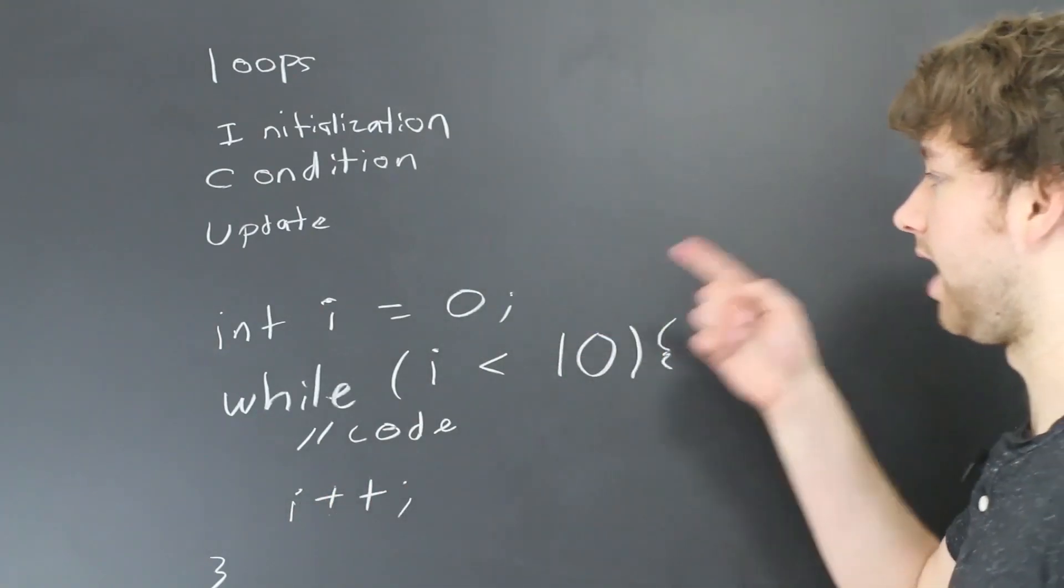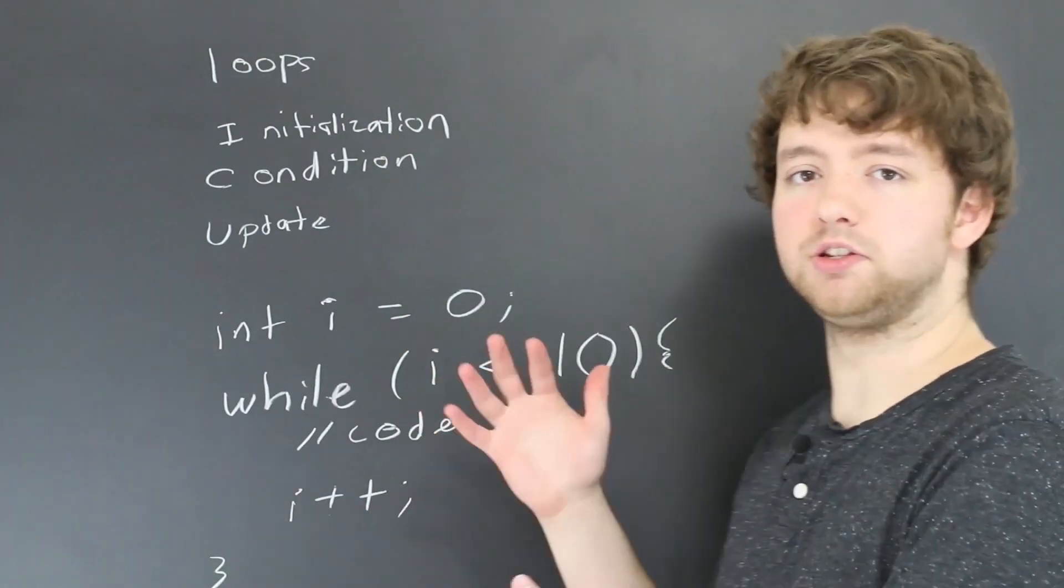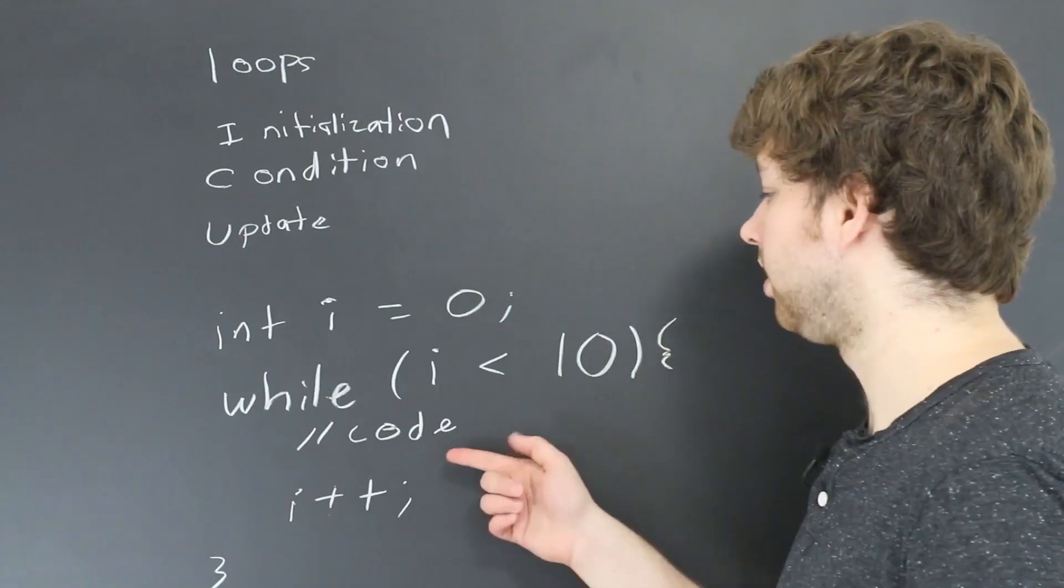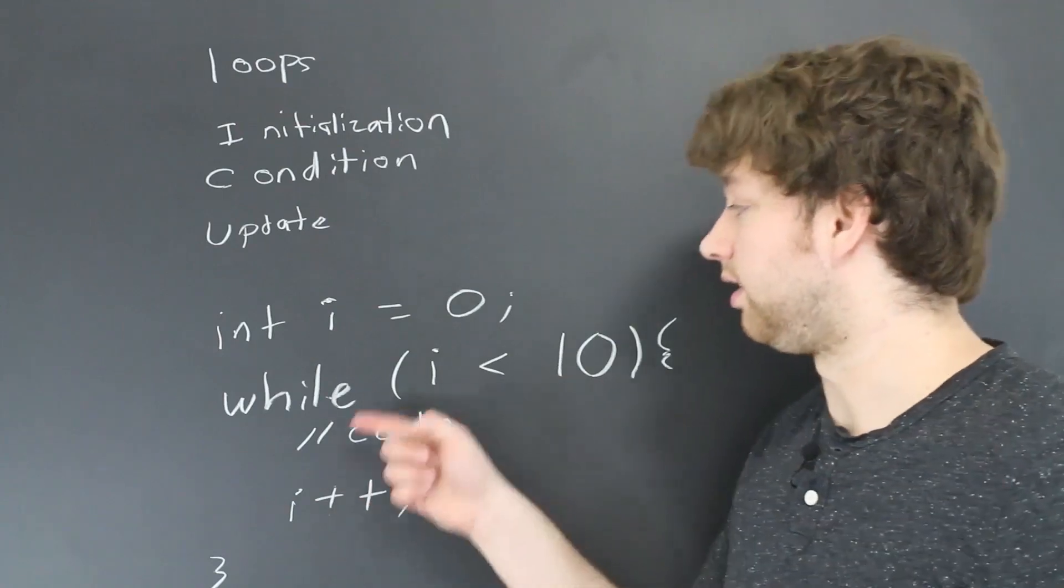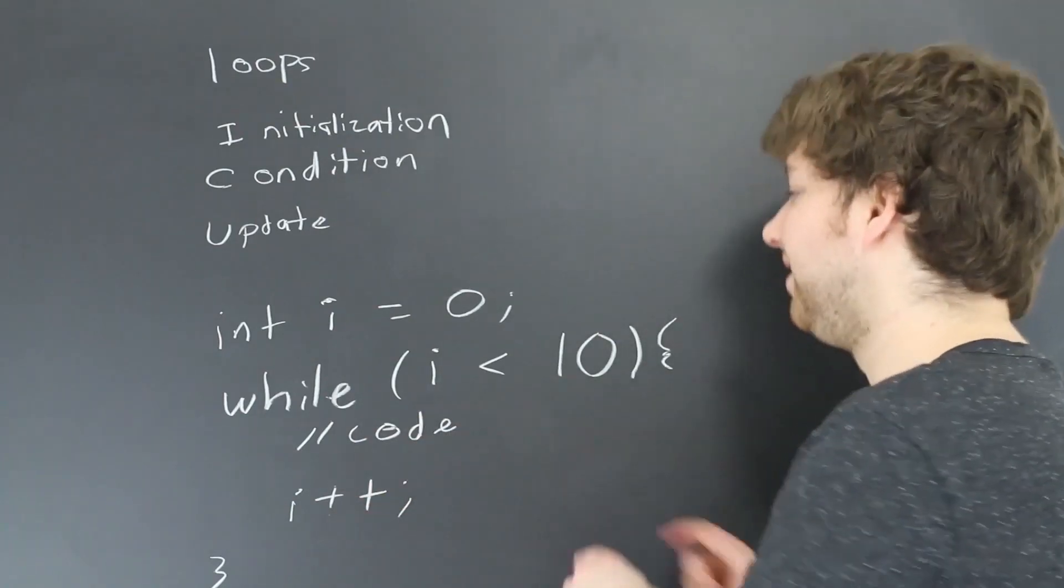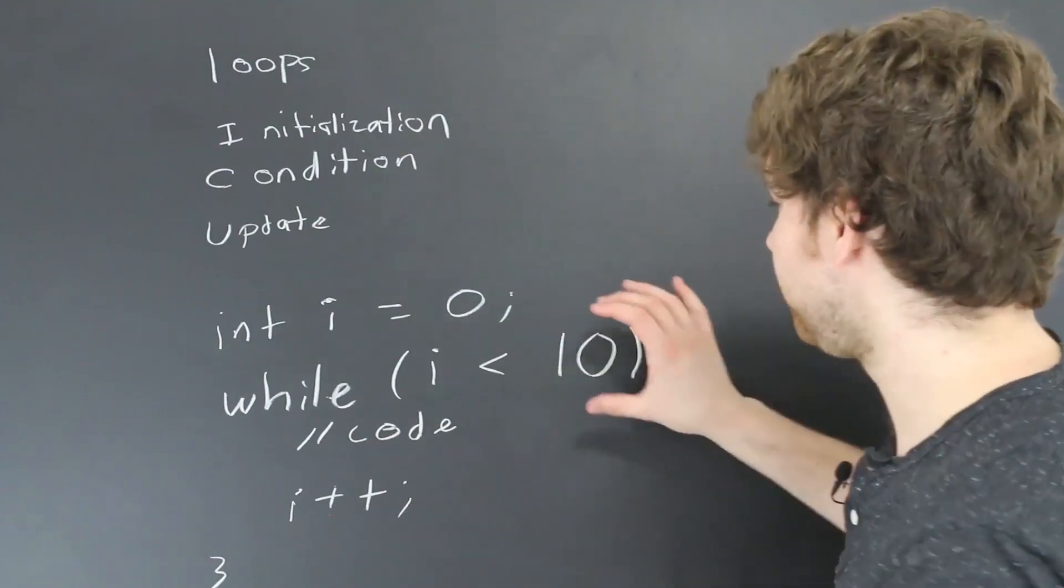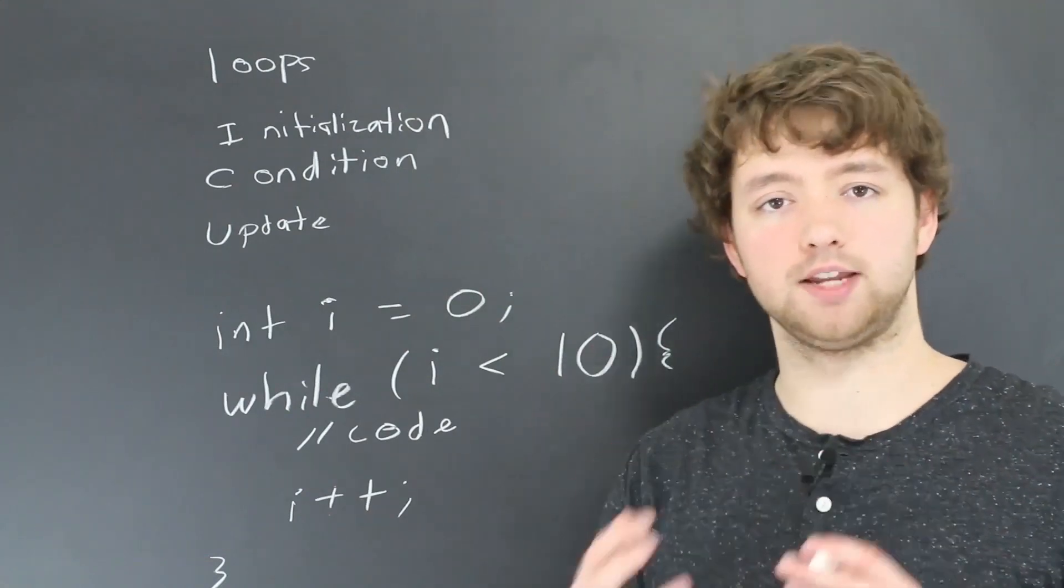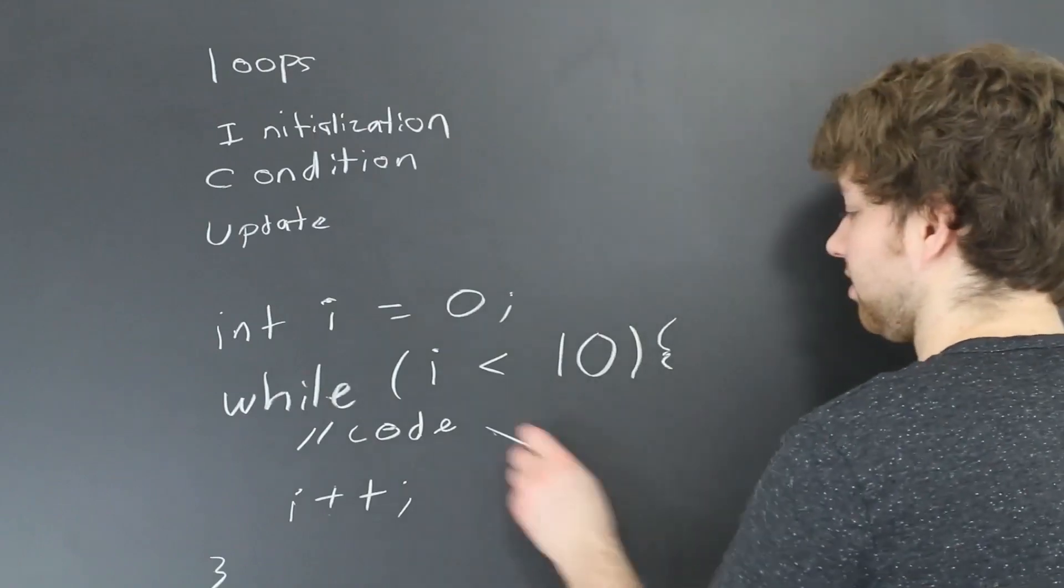So what we need to do is we usually do something like i plus plus. So that's going to increase i to one after the first iteration. Iteration is the word to describe one time through the loop. So the first iteration at the end of it, i is going to be increased to one. And then that comparison is going to happen again. And then it's going to go through the code. i is going to be increased to two, then that comparison, then the code, and then three. And it's going to keep doing that. So this is the syntax to create a loop that's going to execute 10 times. And the thing we want to execute 10 times is in this code right here.